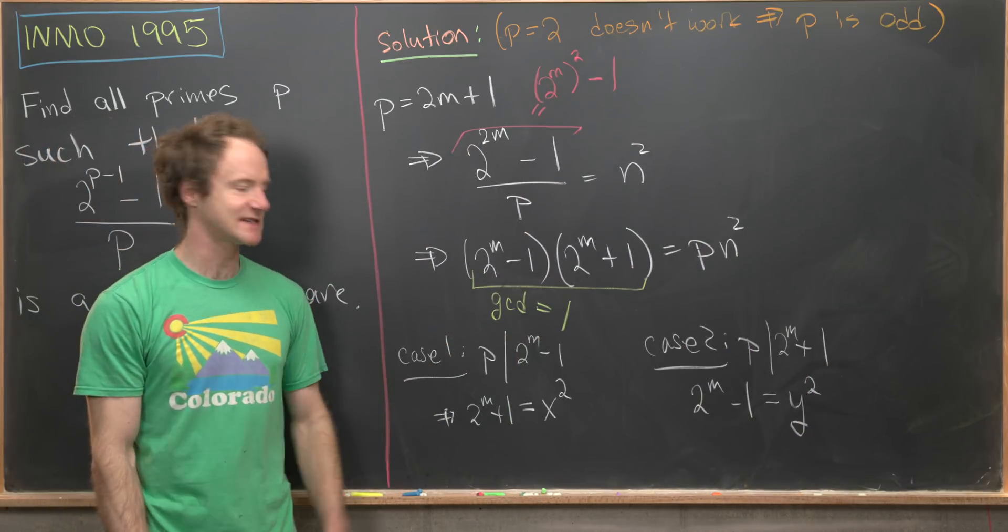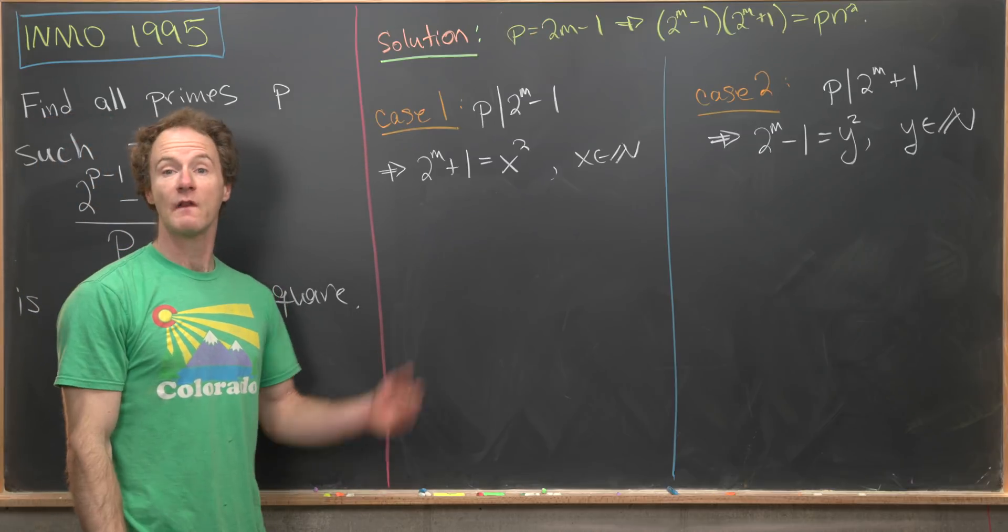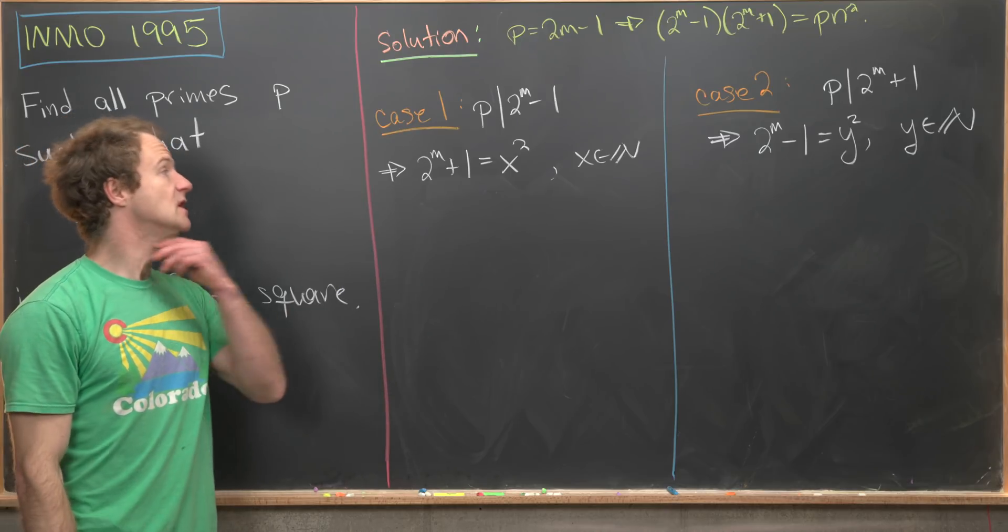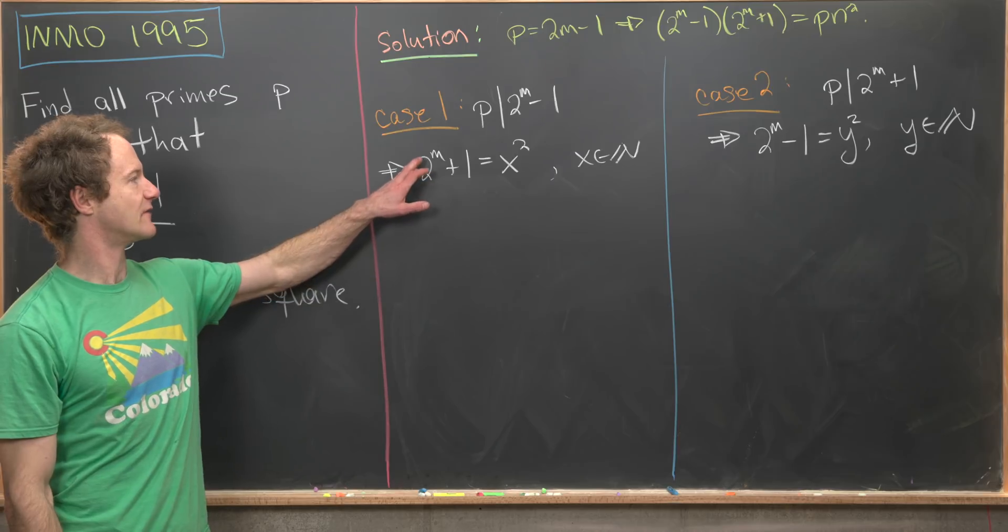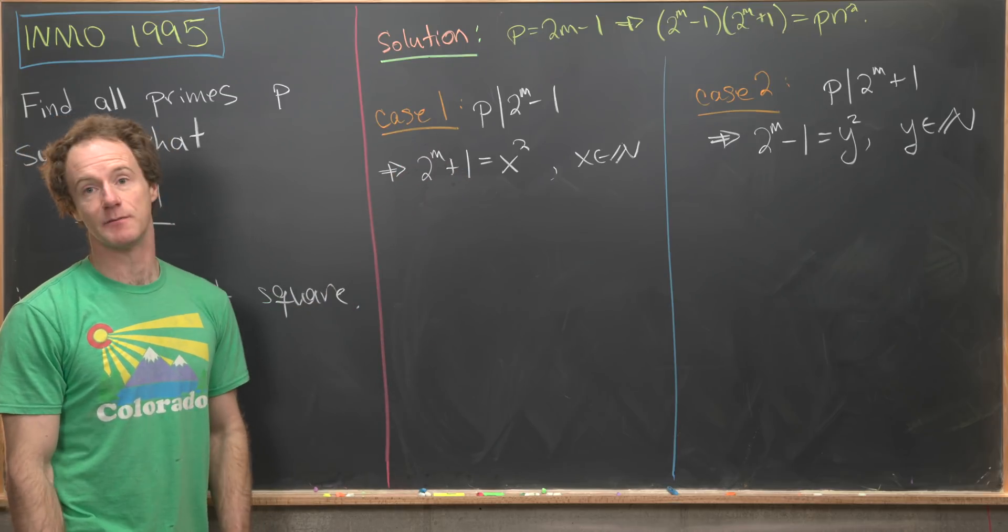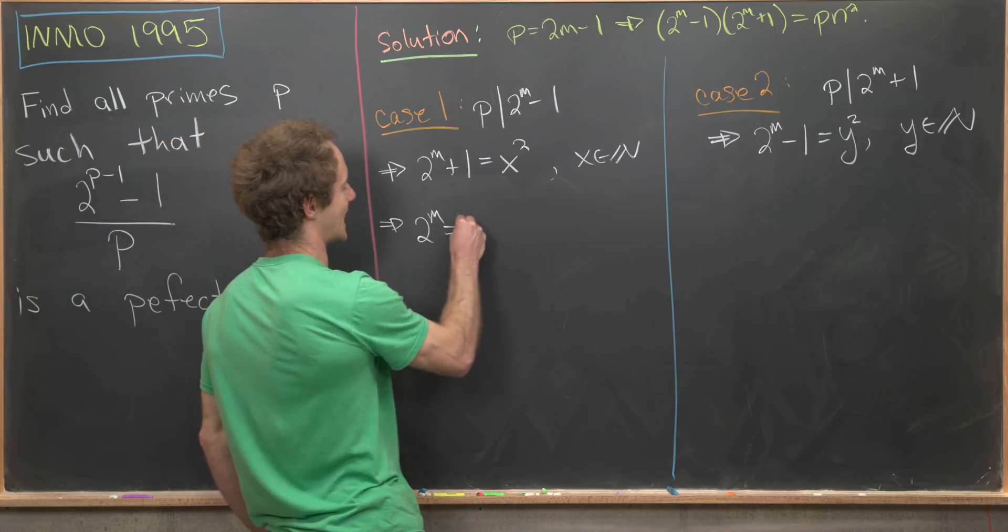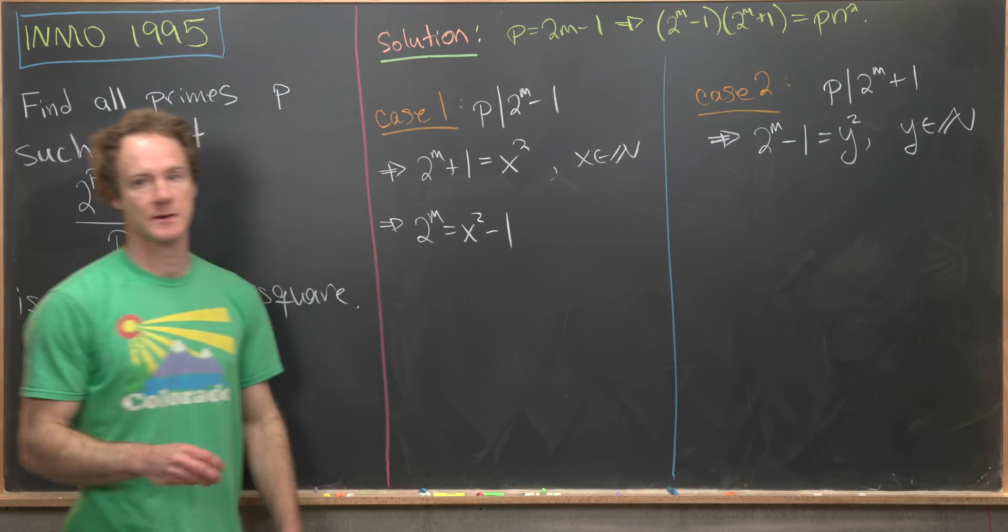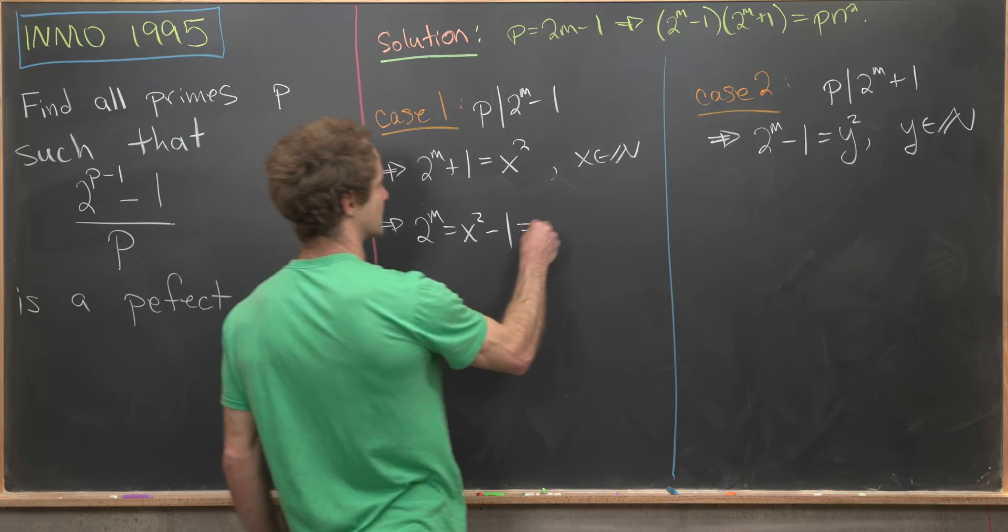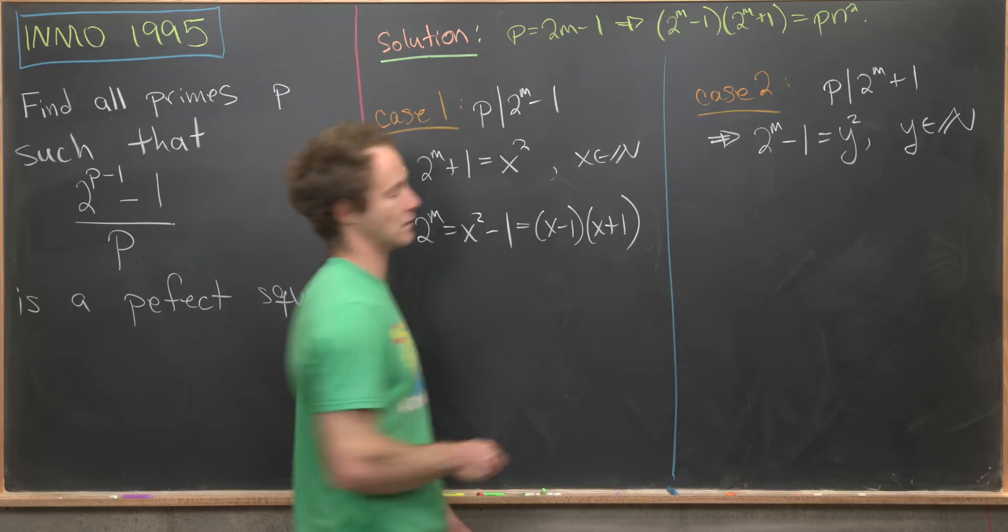Okay, so now that we've got these two cases laid out, let's bring those to the top and then we'll finish it off. On the last board, we got this broken down into two cases, and now we're ready to finish off these cases. So let's start with this one where we have 2^m + 1 = x^2, x is some natural number. Notice that that tells us that we can write 2^m = x^2 - 1. But that has a nice factorization as it is a difference of squares. We can write this as (x-1)(x+1).